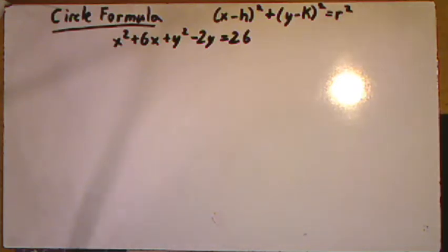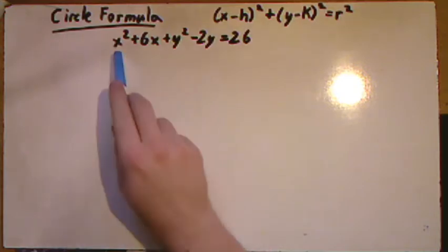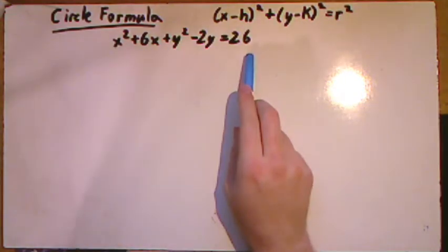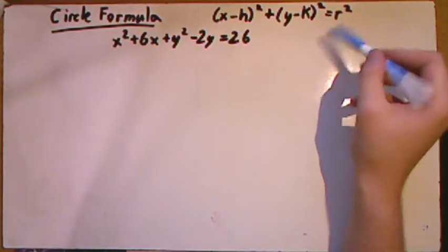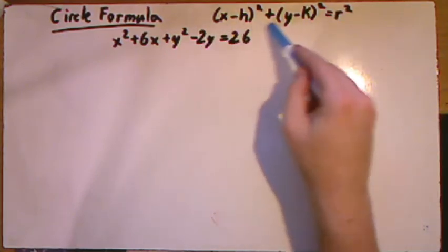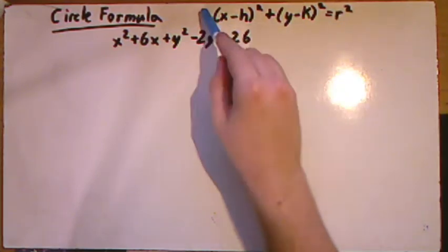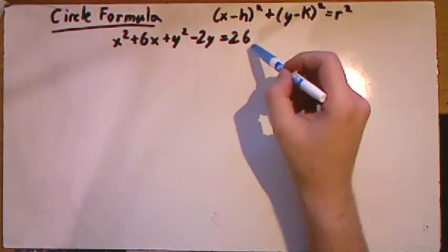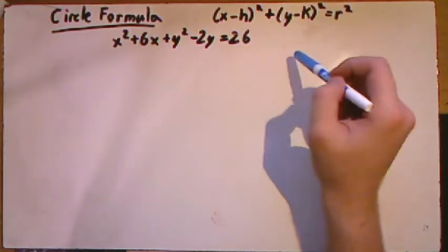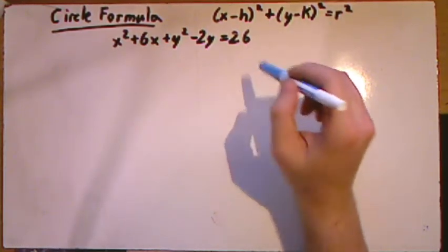When we had left off, we used our FOIL method on some binomials in order to get a circle equation that looks like this. We saw that starting from an equation that looks more closely to the actual formula, we're able to get this one right here, and so this is a circle formula.